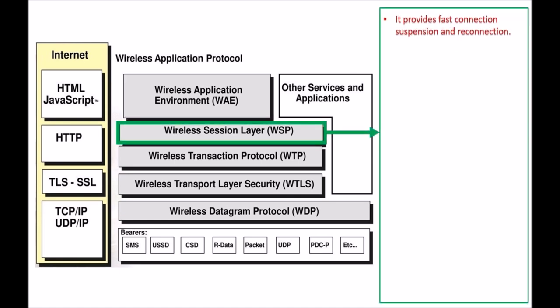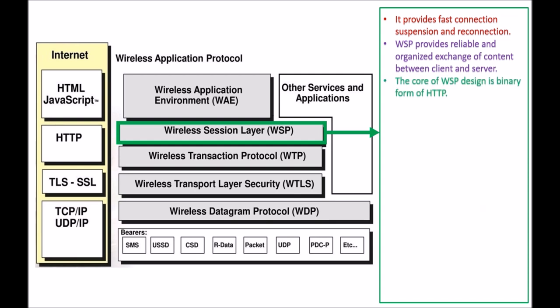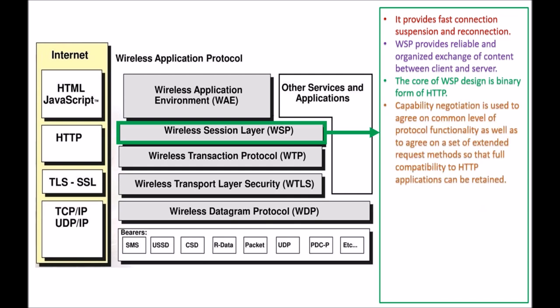Next we are having WSP, which is Wireless Session Protocol. WSP provides fast connection suspension and reconnection, and provides reliable and organized exchange of content between client and server. The core of WSP design is a binary form of HTTP, which is Hypertext Transfer Protocol. Capability negotiation is used to agree on a common level of protocol functionality as well as to agree on a set of extended request methods so that the full capability of HTTP applications can be retained.